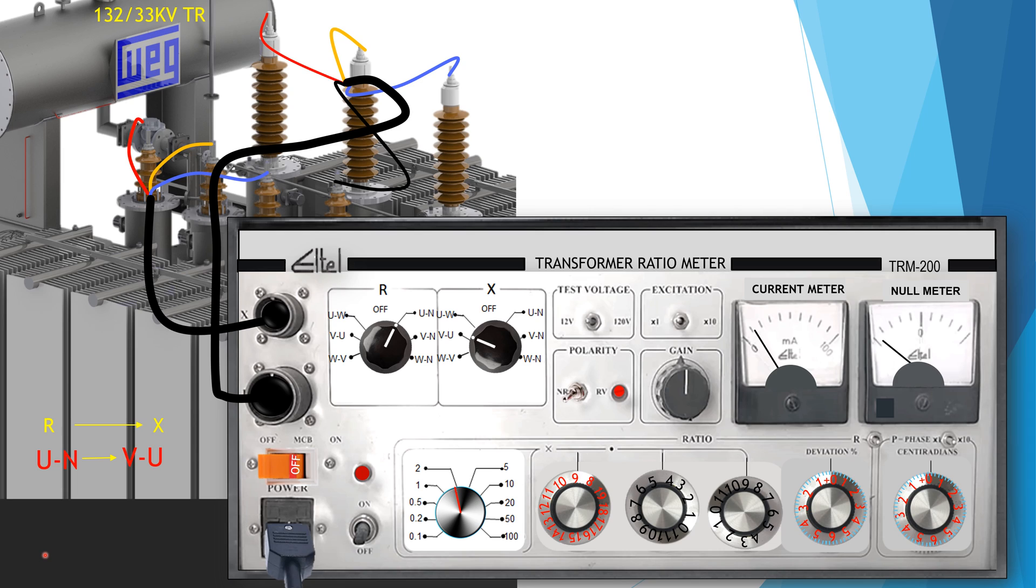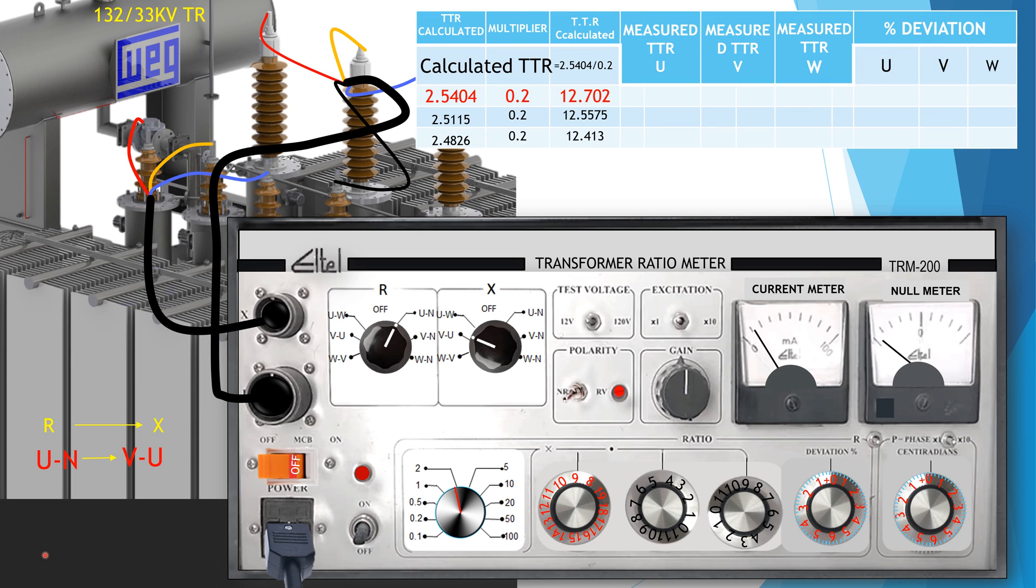Through this testing procedure, now we shall find the percentage deviation of TTR. To calculate TTR against which testing is conducted is 2.540 divided by 0.2 is equal to 12.702. The whole number here is 12, first fraction is 7, and second fraction is 0. Now watch the testing process.